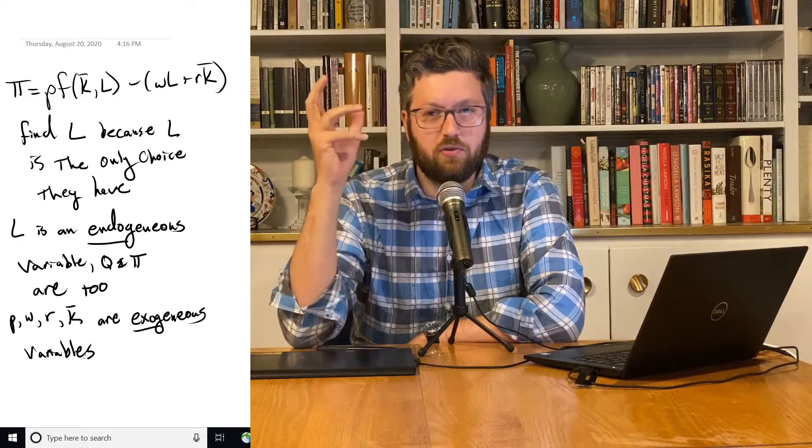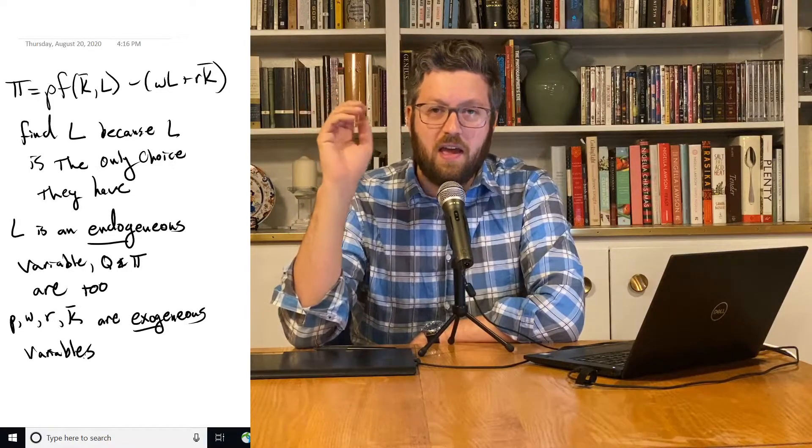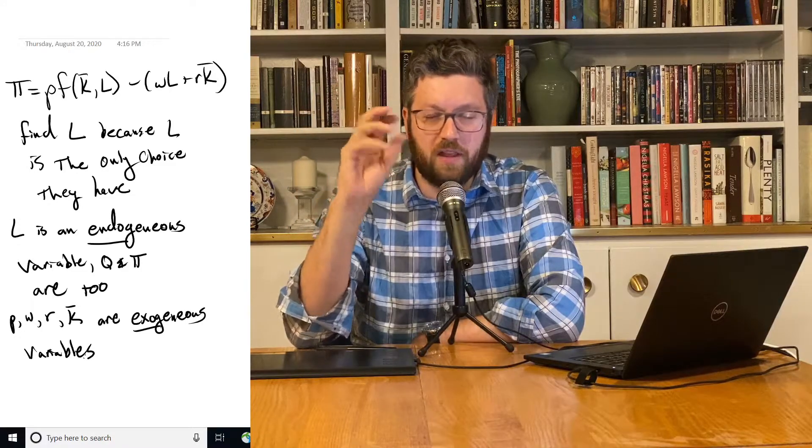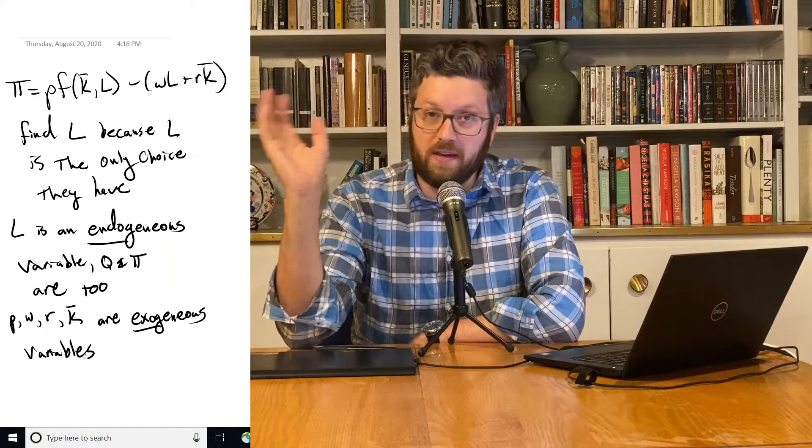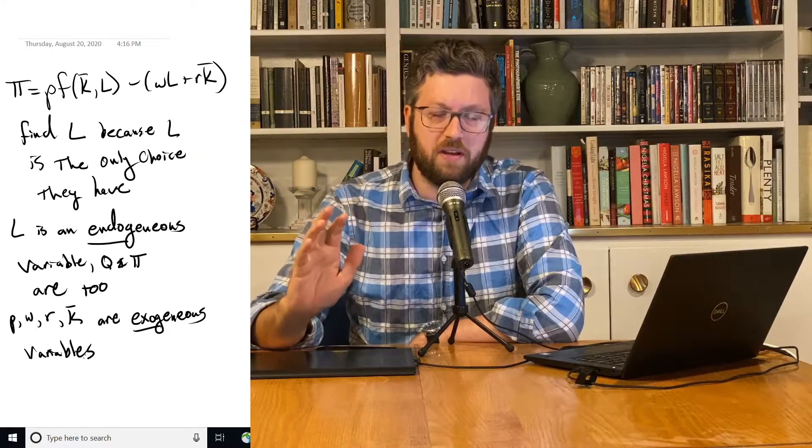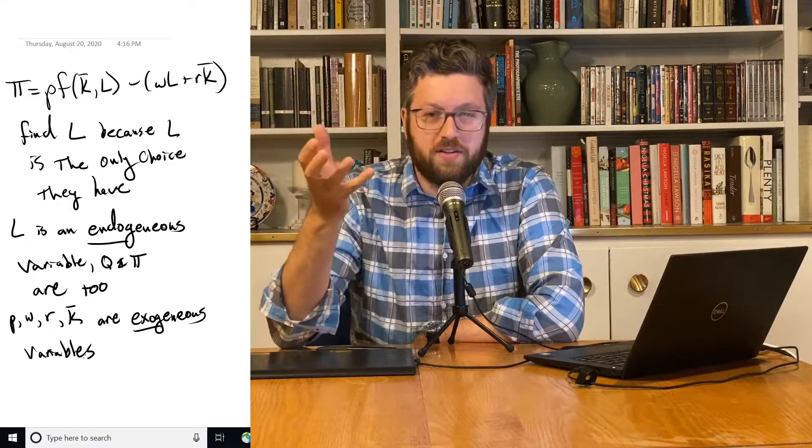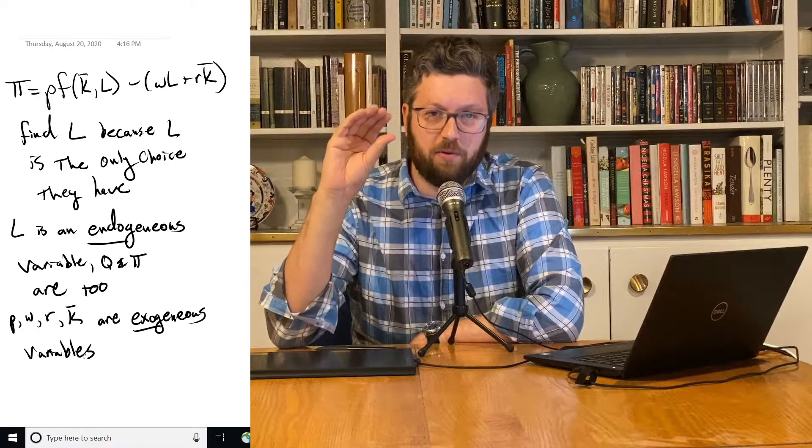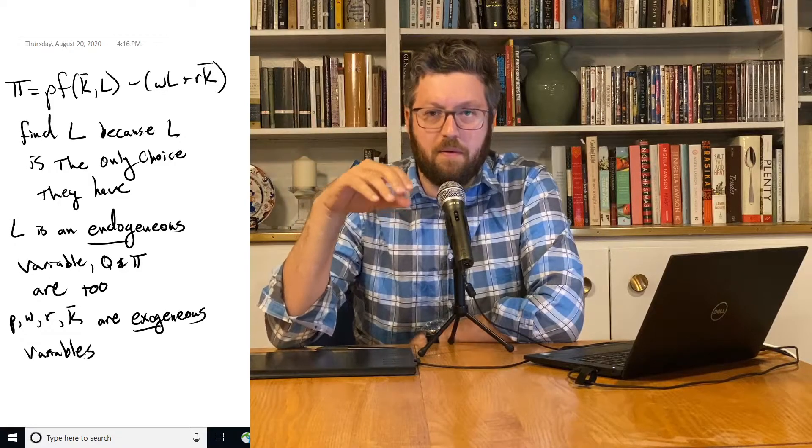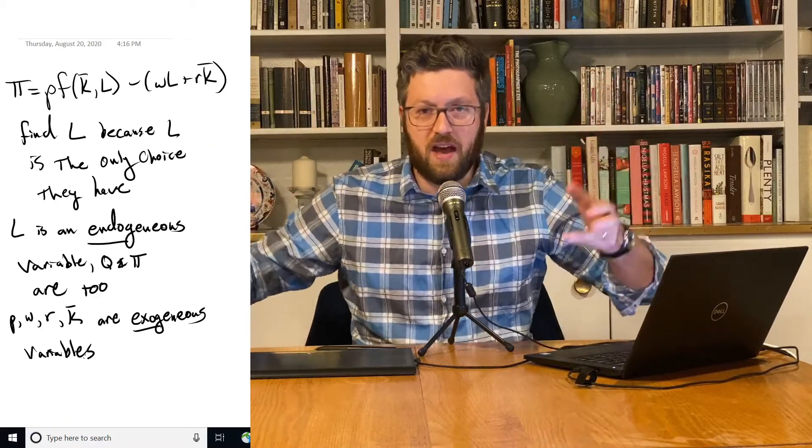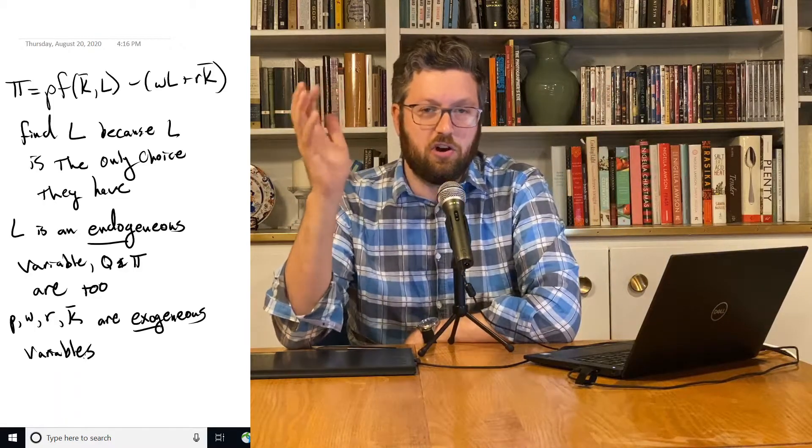We're going to assume that these prices of labor, capital, and the output are all given to us. And because it's a short-run problem, we're also assuming it's told to us how much capital they have. That's not a choice variable we have. Those variables are called exogenous. They come from outside the model. They just come from outside, and this model does not determine their value.